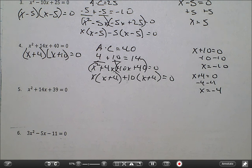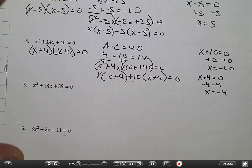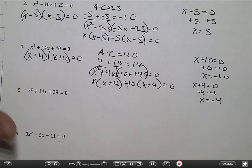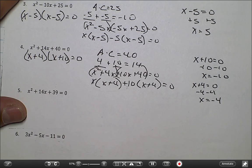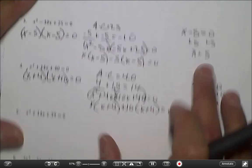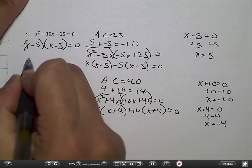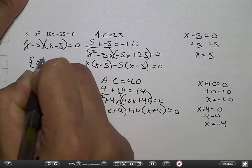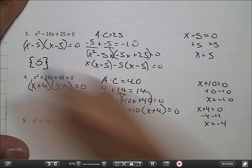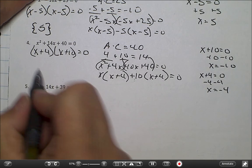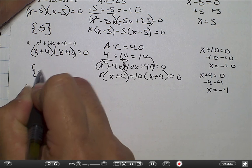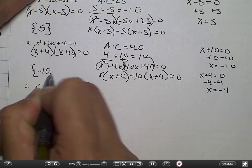Now, another way we can write this is called a solution set. So we could write it in a solution set like this — for this one it would be braces with 5 inside. And this one over here is going to be braces with negative 10 and negative 4.